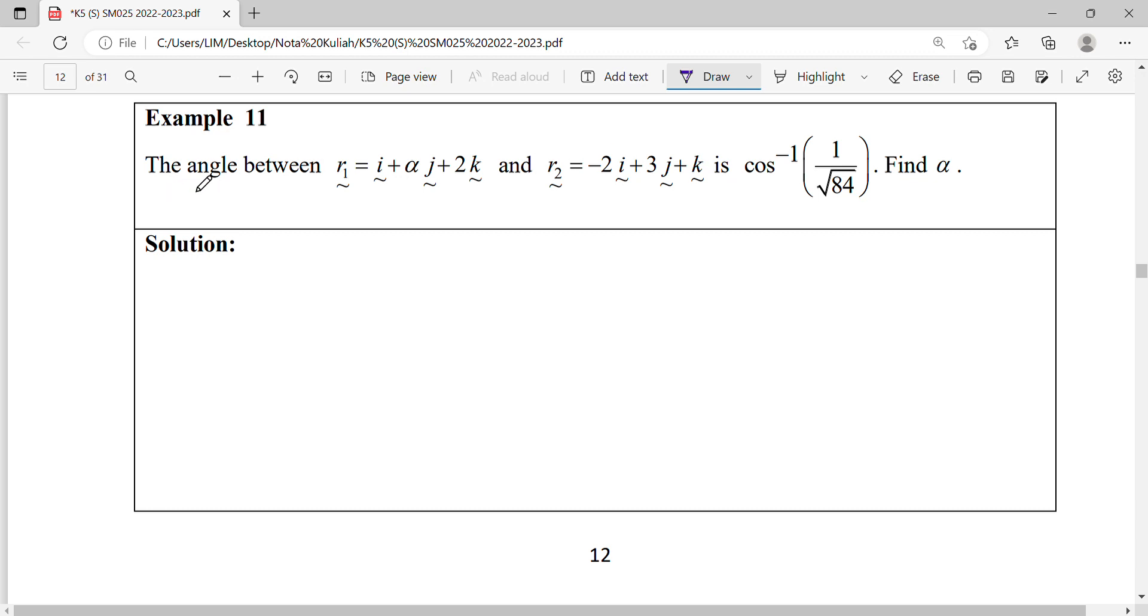Given that the angle between these two vectors is this, find alpha. For vector r1, it will be equal to 1, alpha, 2. Vector r2, read out this: negative 2, 3, 1.